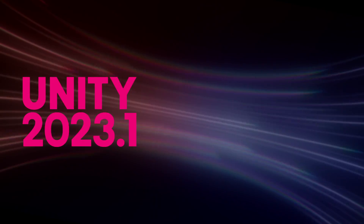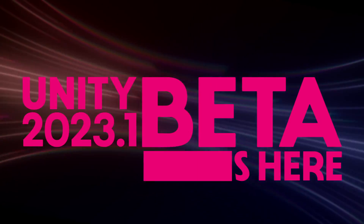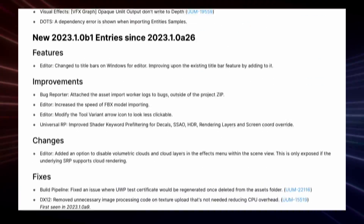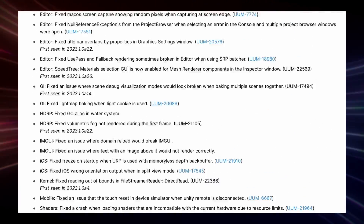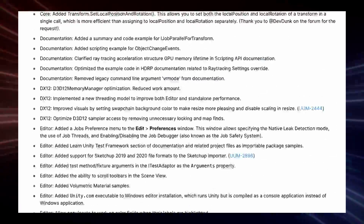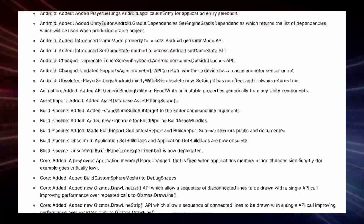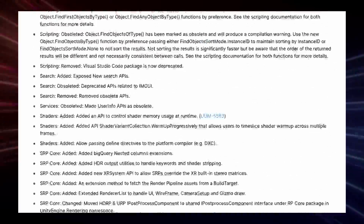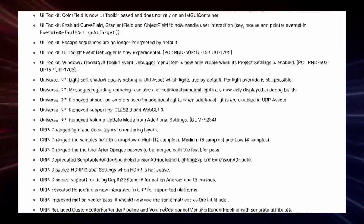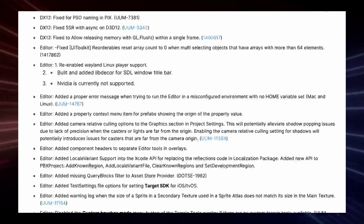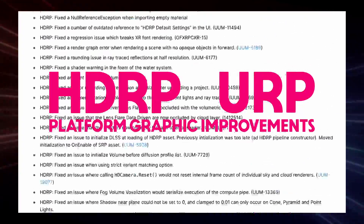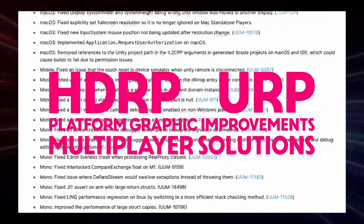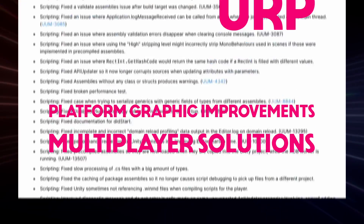The Unity 2023.1 beta is here. While there's a very long list of features, improvements and fixes listed on the official change log, the biggest changes focus on improving features and render quality for both the HDRP and URP along with platform graphic improvements and multiplayer solutions.